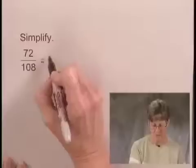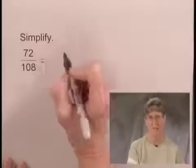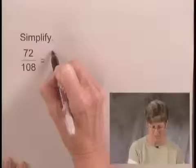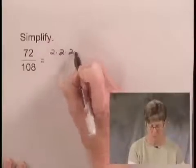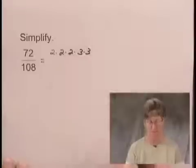Now, 72, if we used a series of divisions or a factor tree, we would find that its prime factorization is 2 times 2 times 2 times 3 times 3.